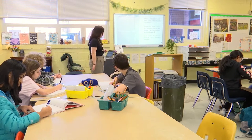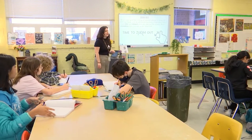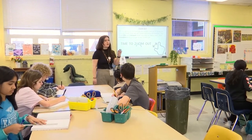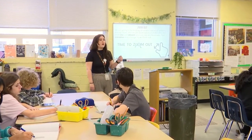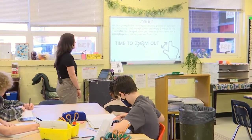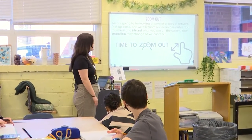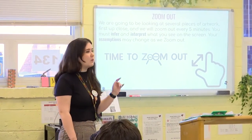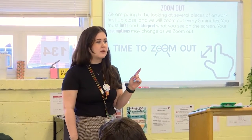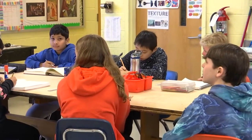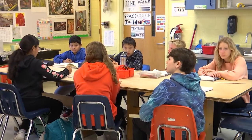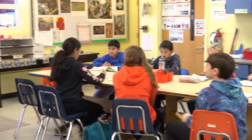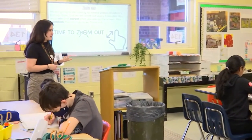So how this is going to work — we're going to be doing what's called zoom in. We are going to be looking at several pieces of artwork, first very, very up close. So you're not going to quite know what it is till the end. You must infer and interpret what you see on the screen. Your assumptions may change as we zoom out. Who can remind me — what does it mean to infer? To make a guess based on what evidence? So since we're in art, what is the evidence here? What you're looking at.